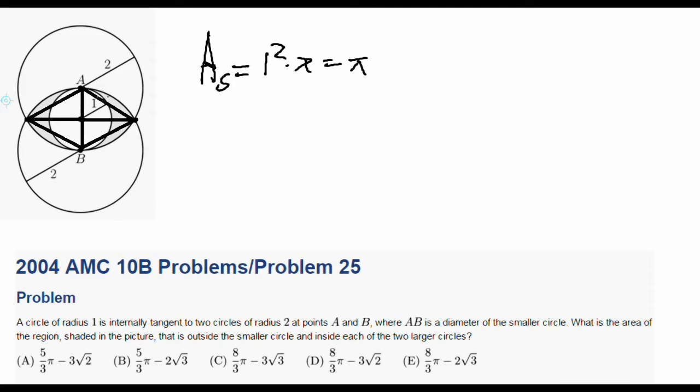First of all, notice that because the radius of the small circle is 1, that means this AB, that line, that length is 2. And notice because the radius of these large circles is 2, the side lengths of these triangles are also 2. And because they're both length 2, because all of the legs are the same, these are equilateral triangles. So this is 60 degrees, this is also 60 degrees because of symmetry.